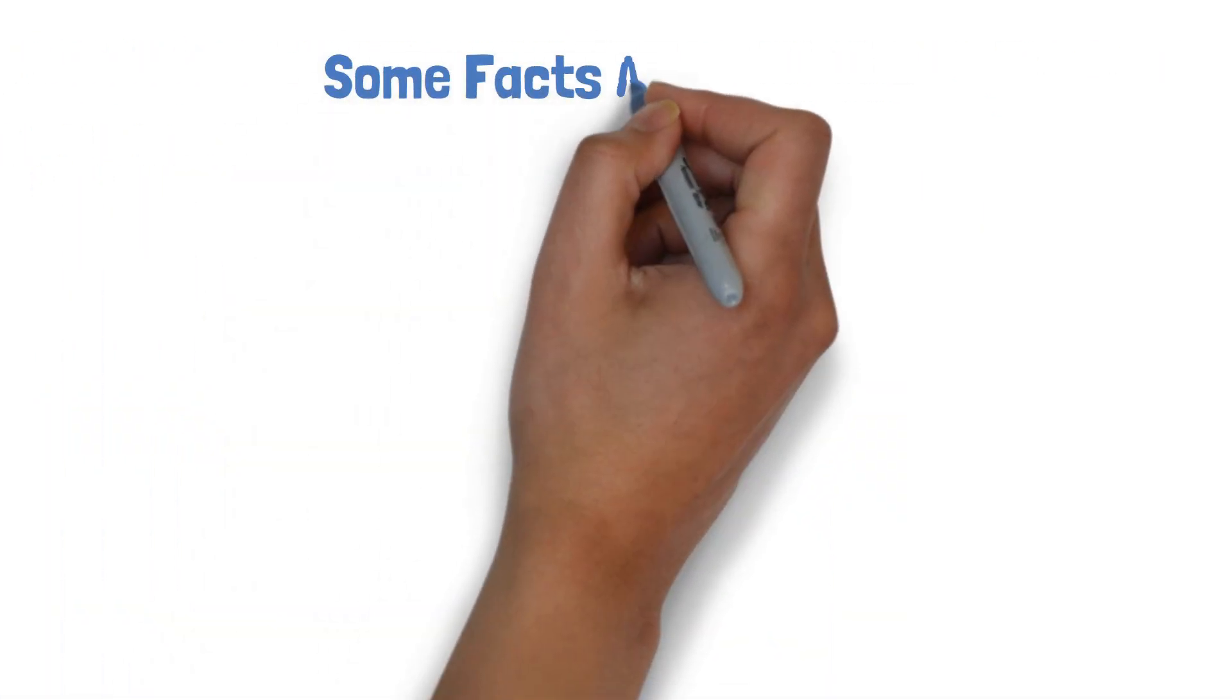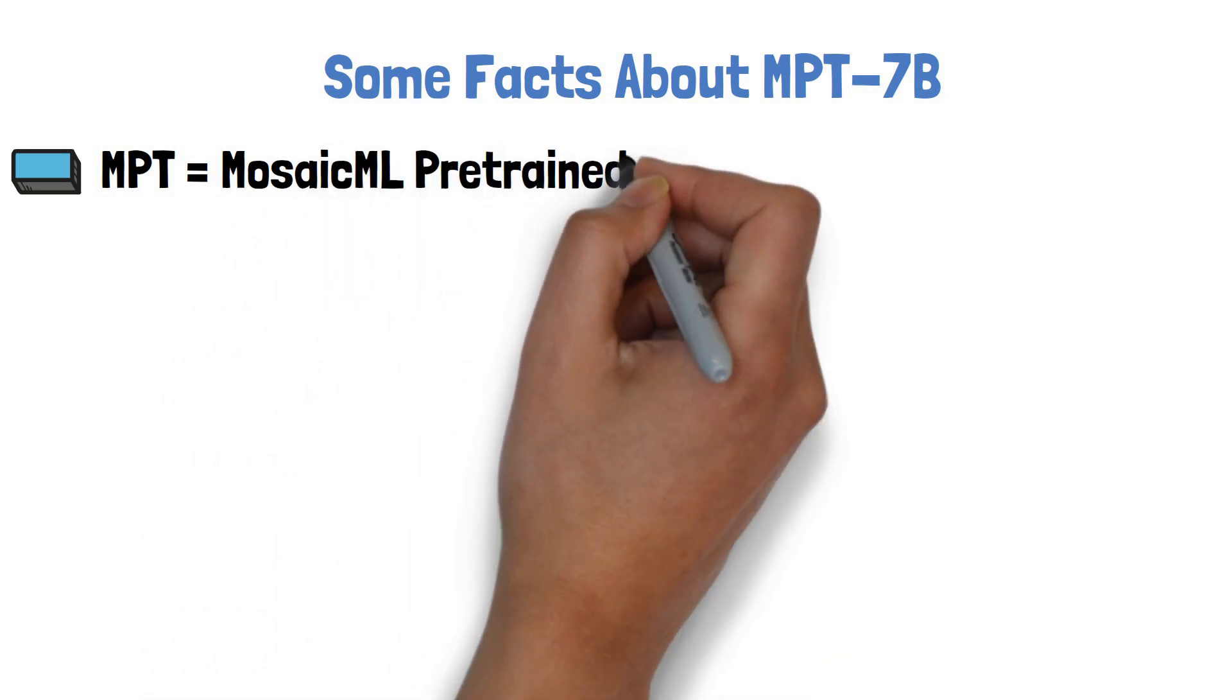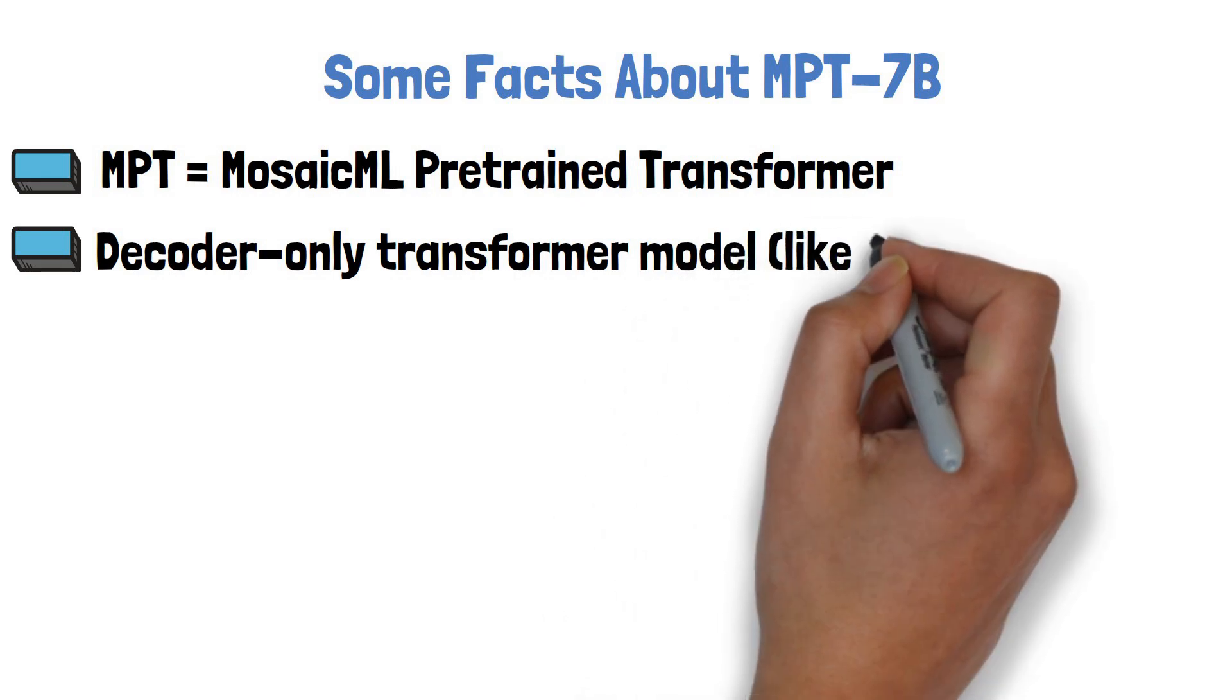Let's start with some facts about the model. MPT stands for MosaicML Pre-trained Transformer. The model architecture is a decoder-only transformer similar to GPT model.